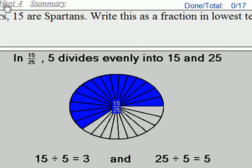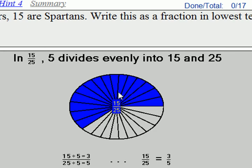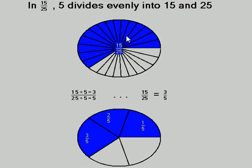When we look at the last hint, we can see in blue that 15 25ths is the same as 3 5ths by comparing the pictures.